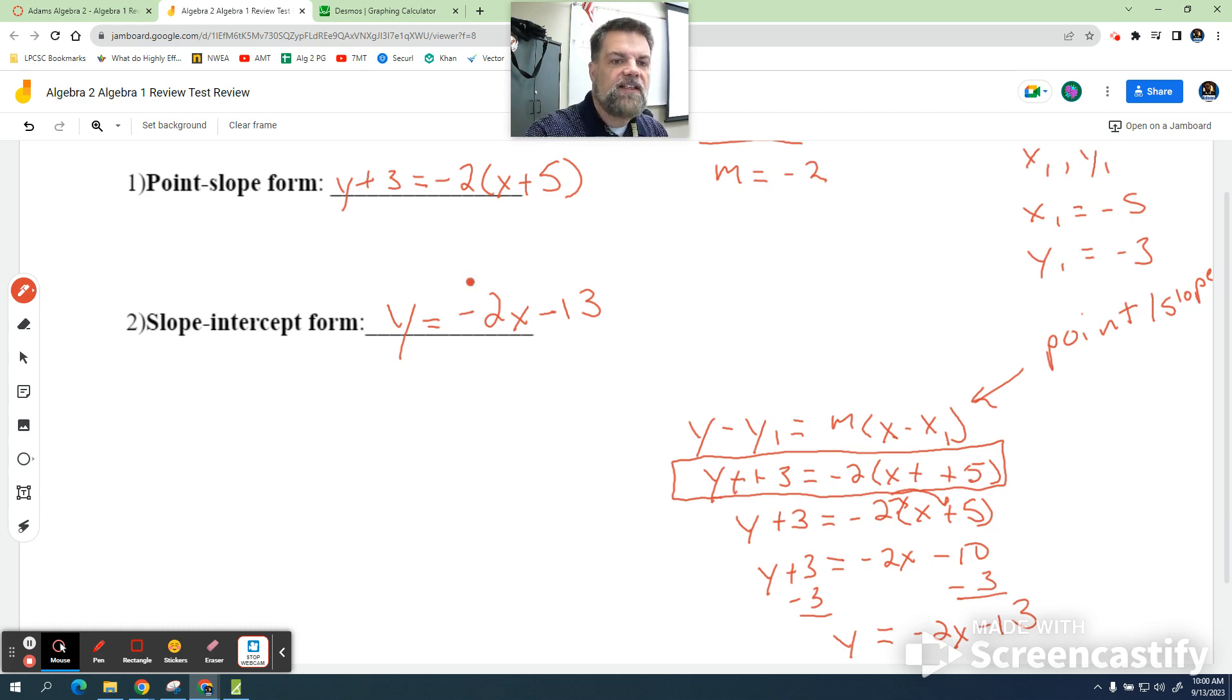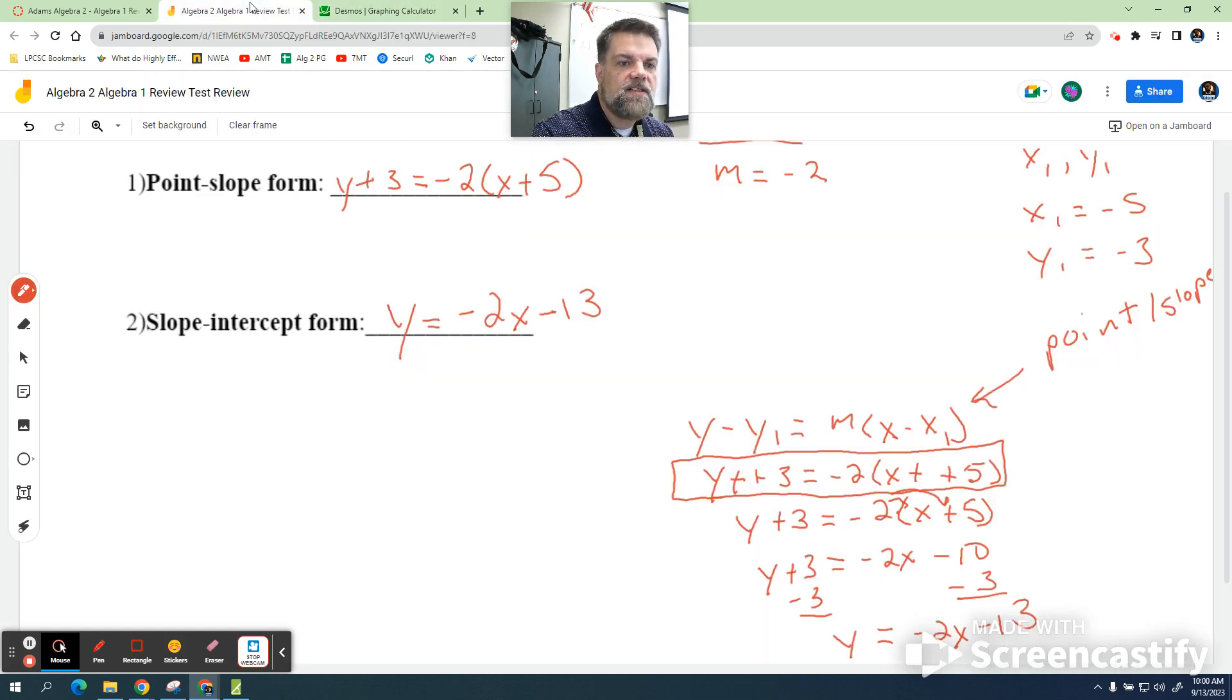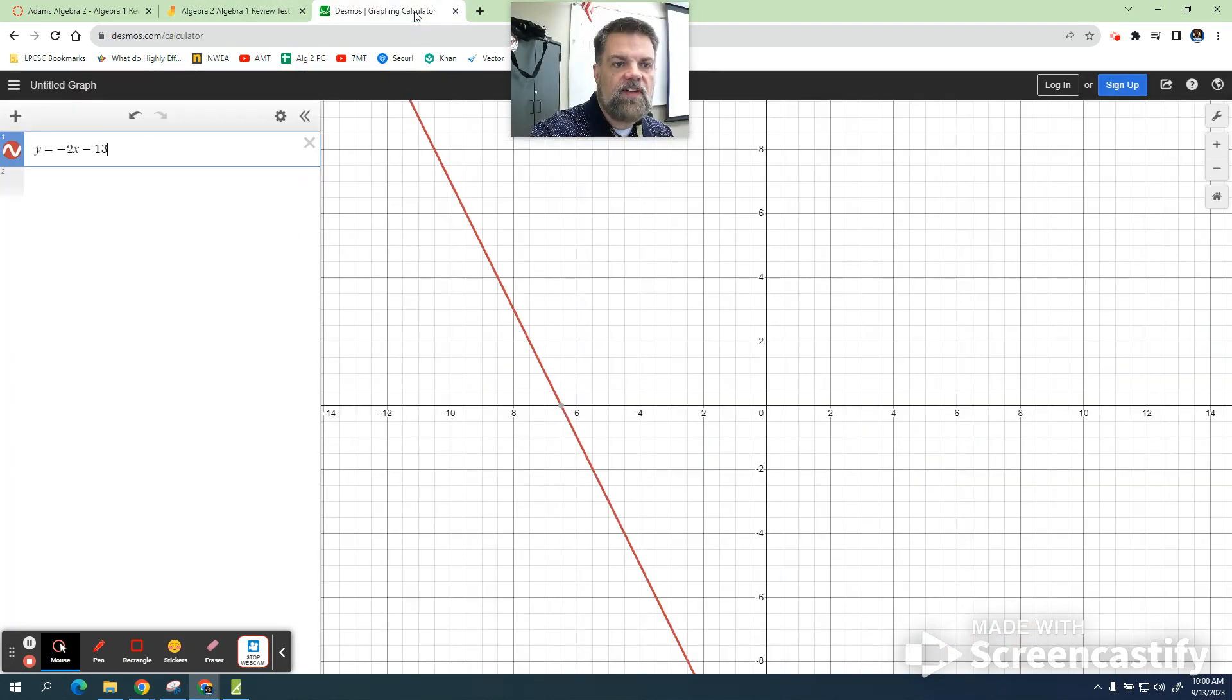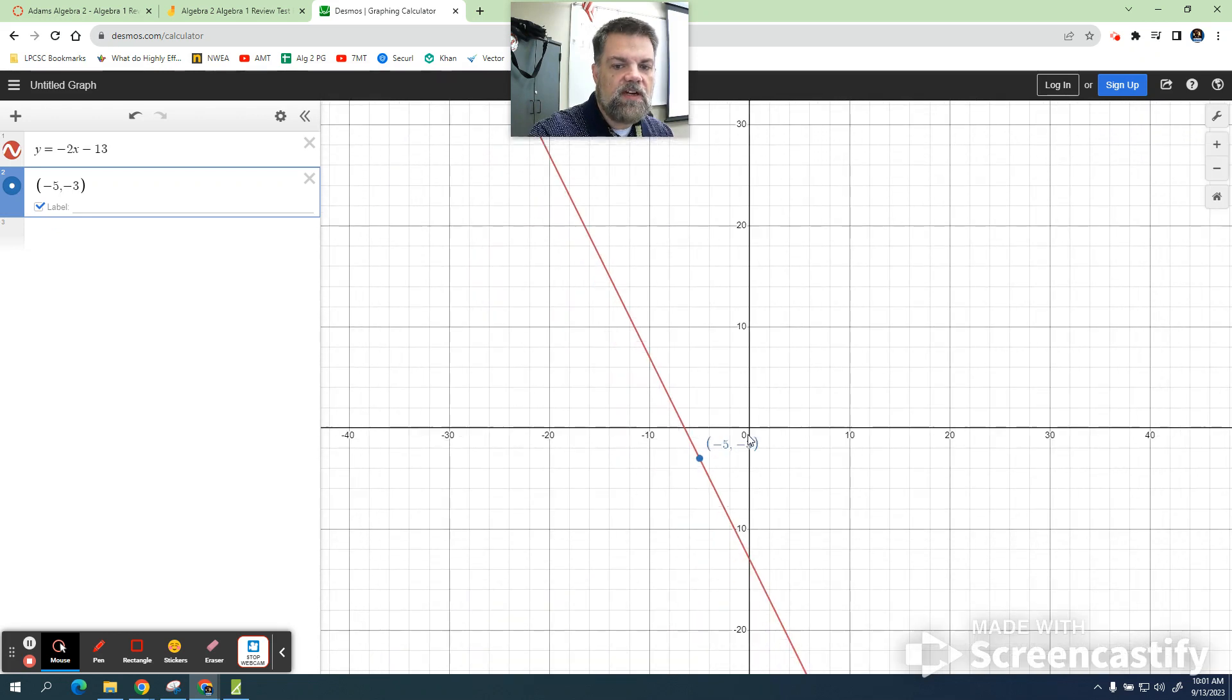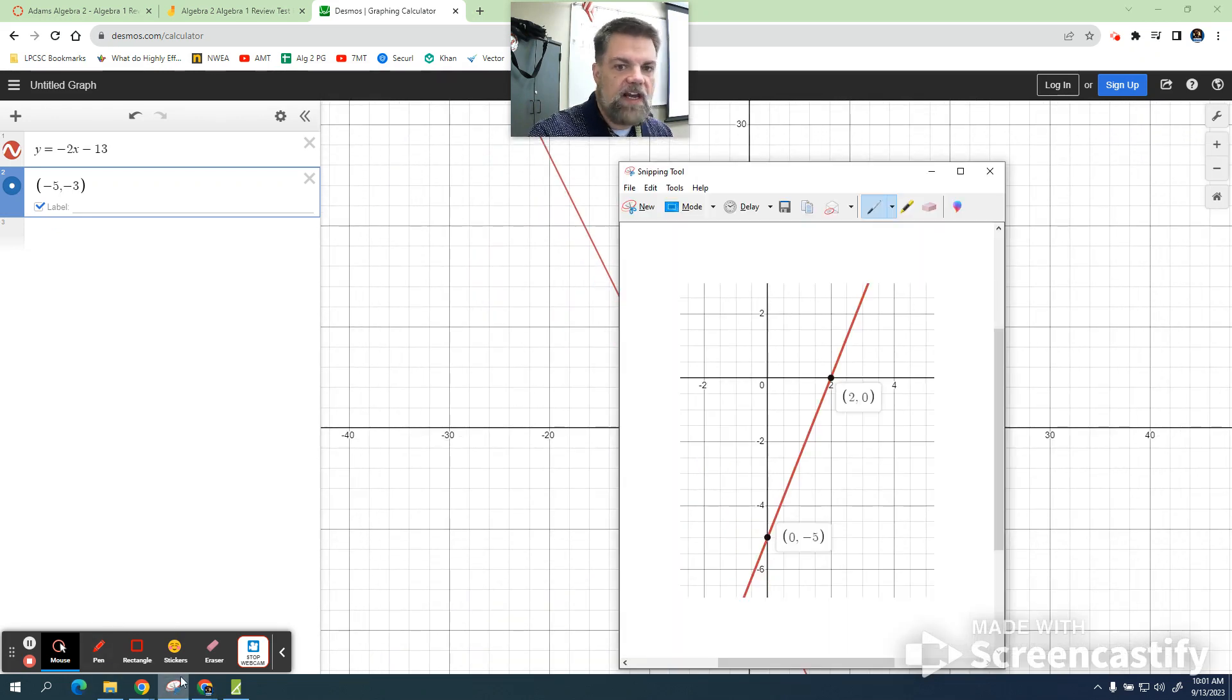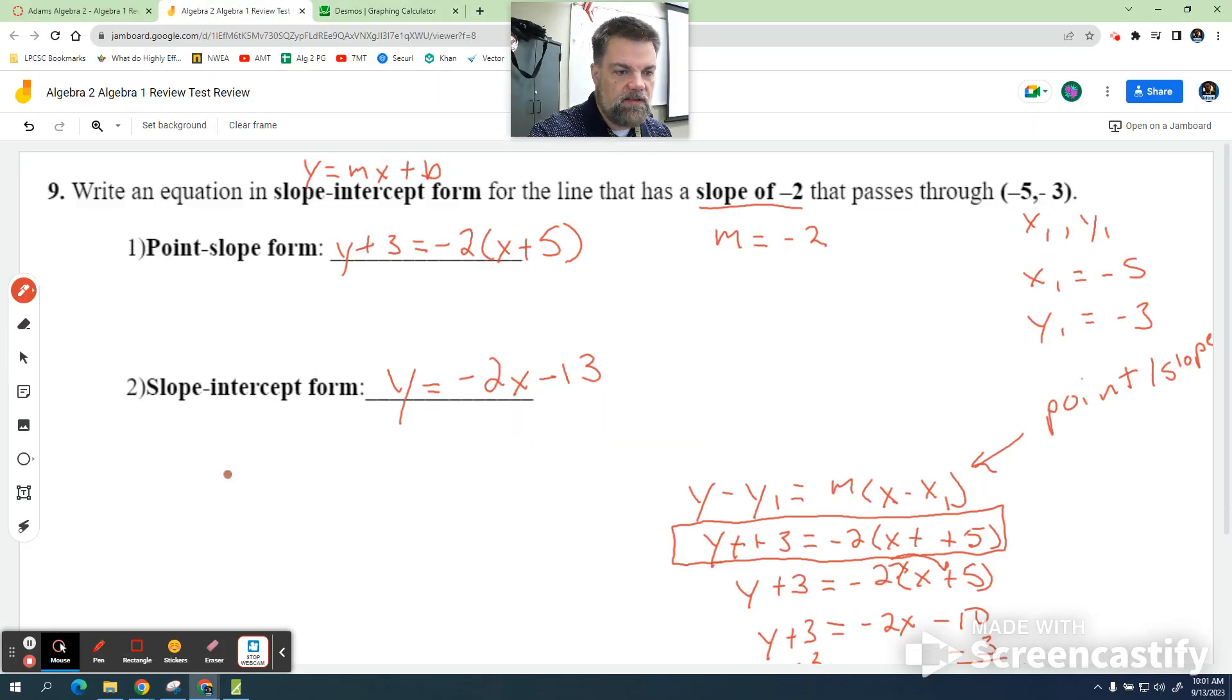Alright. How do I double-check that? Plug it in the calculator. I'm going to say y equals minus 2x minus 13. And then it has to pass through negative 5, negative 3. So somewhere down here, negative 5, negative 3, I'm just going to type it in as a point: negative 5, comma, negative 3. And we'll label that. Does that line pass through that point? Yep. So that works, right? Let me take a screenshot of that. And we'll plug that in. That's how you verify it to make sure that your equation is right.